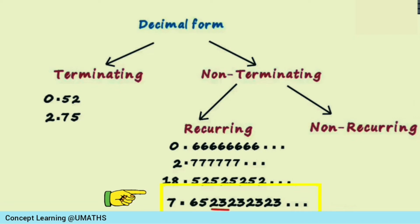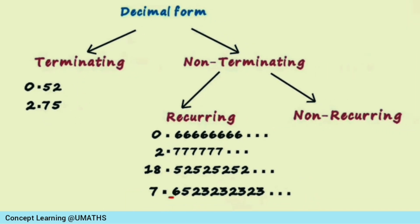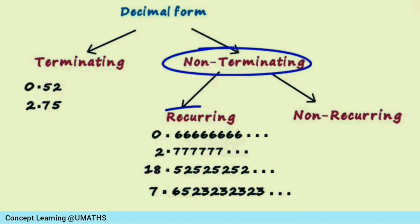Look at this example: 7.6523232323... Here, you can observe that 2 3 is repeated and goes on forever, but the decimal part starts with 6 5. Even this number is a non-terminating recurring decimal. It is not necessary that the repeating part begins after one or two decimal places — since it is continuously going on and repeating, we call them non-terminating recurring decimals.